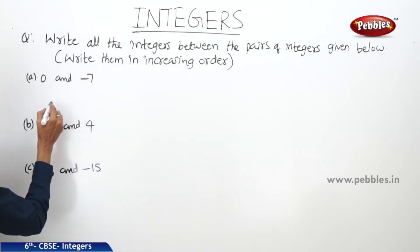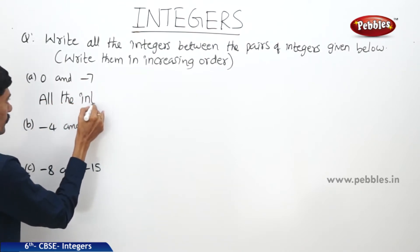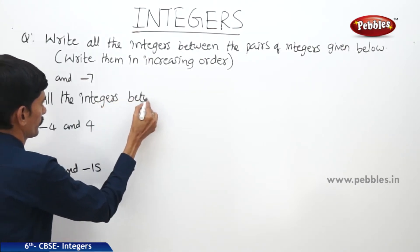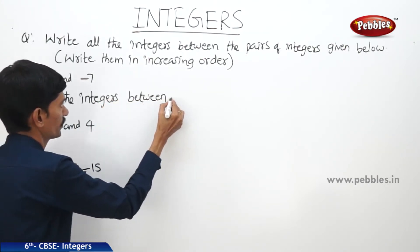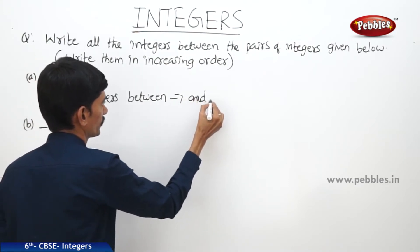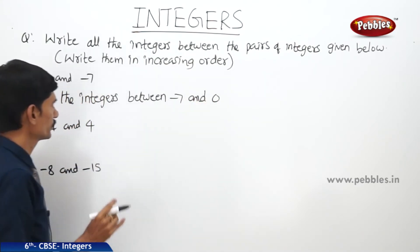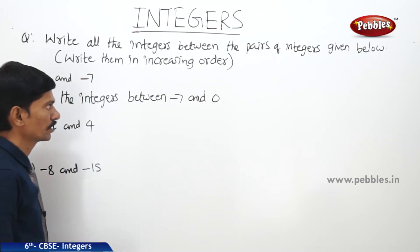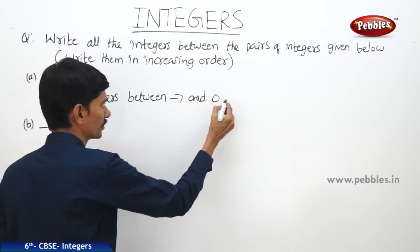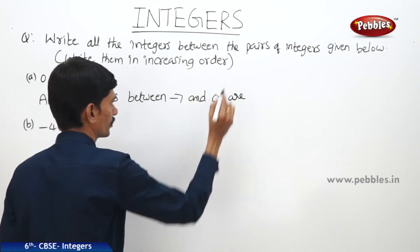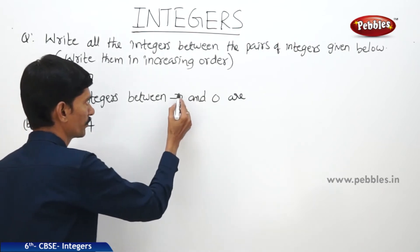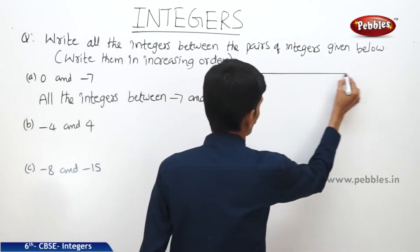Now, all the integers between minus 7 and 0. So first we write these two integers in ascending order — first the smallest, then the biggest. The integers in between these two integers: so after minus 7 on the number line, if you draw the number line...